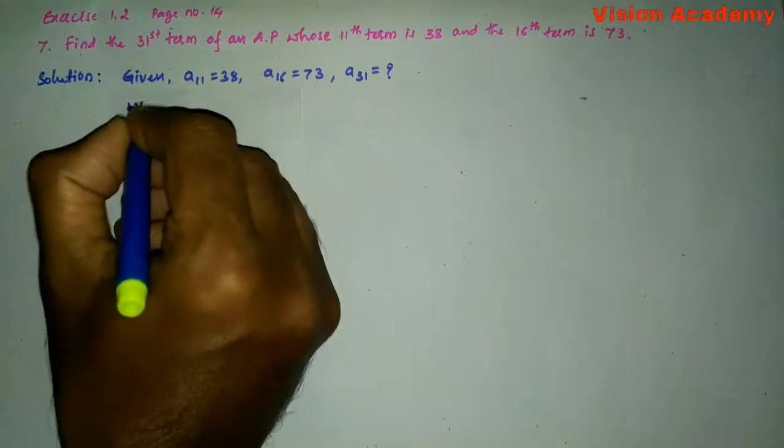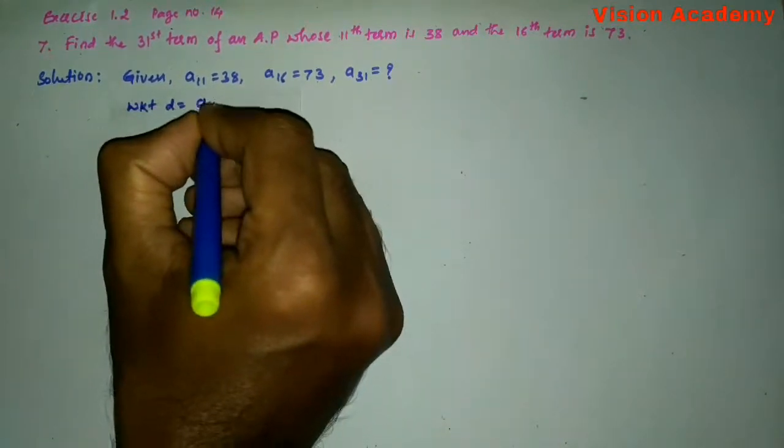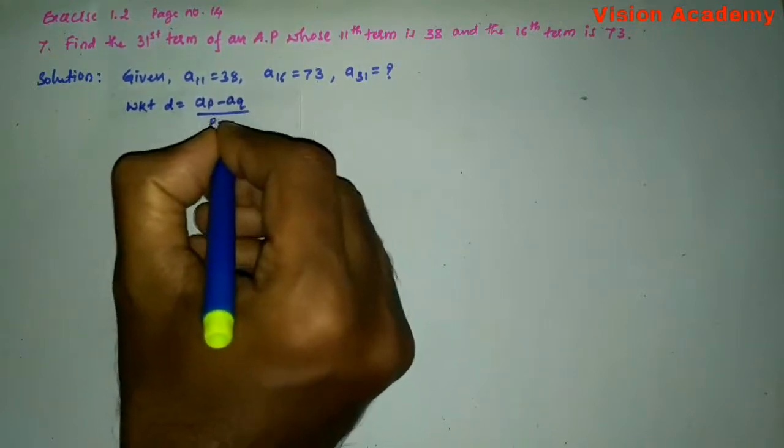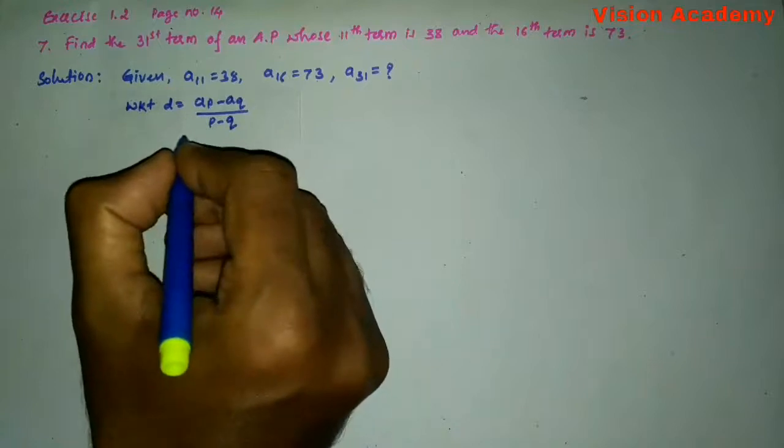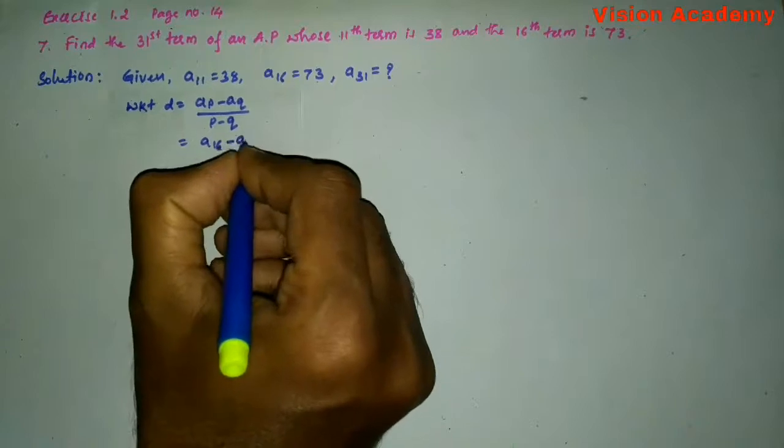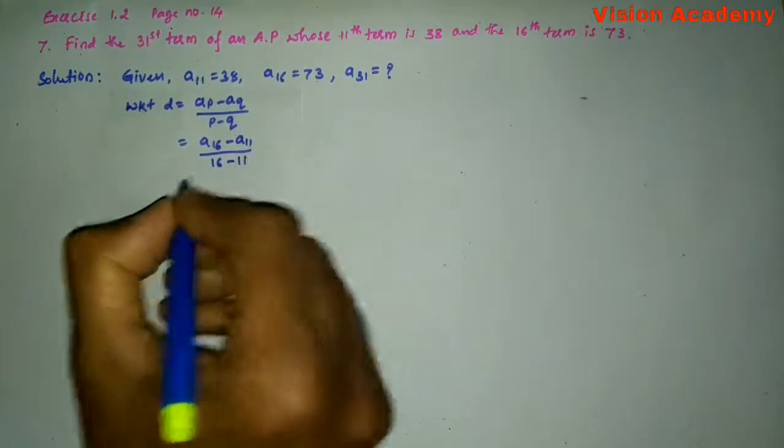We know that D is equal to AP minus AQ whole divided by P minus Q. Here, AP is A16 minus AQ is A11 whole divided by 16 minus 11.